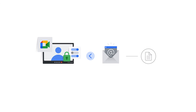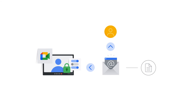After the meeting, the host and co-host receive an automated email that contains a link to the transcript, which is saved as a Docs file in the meeting host's Drive. If the person who turned on the Transcripts feature in the meeting is not a host, that individual also receives an automated email with a transcript.